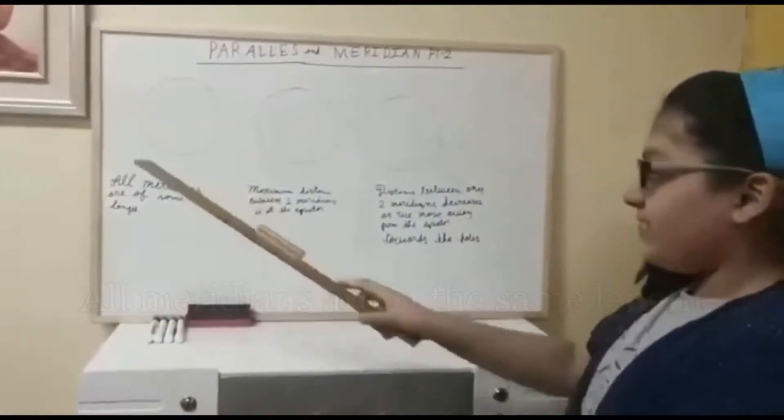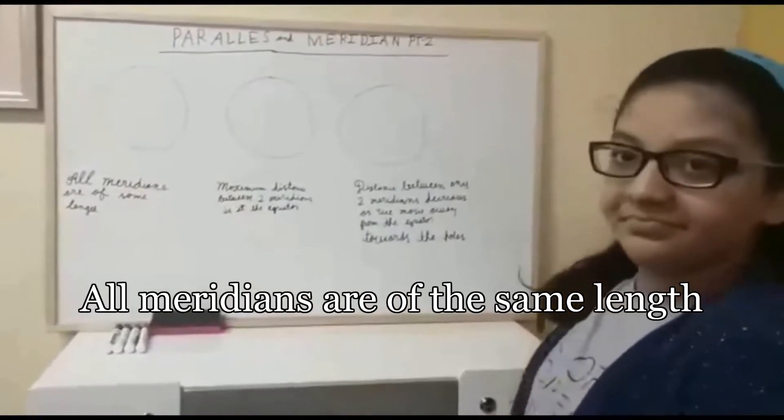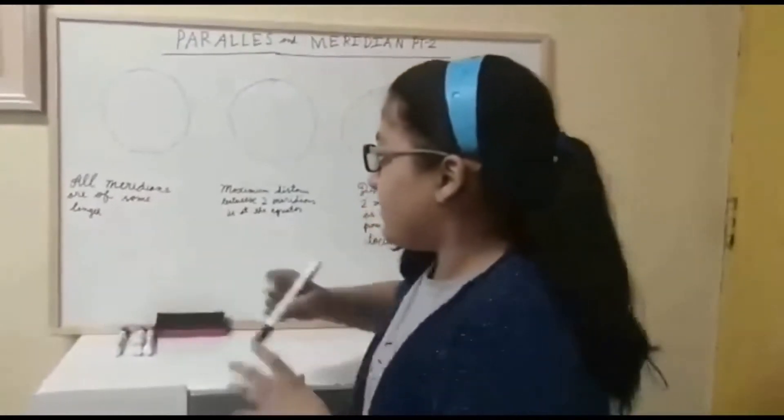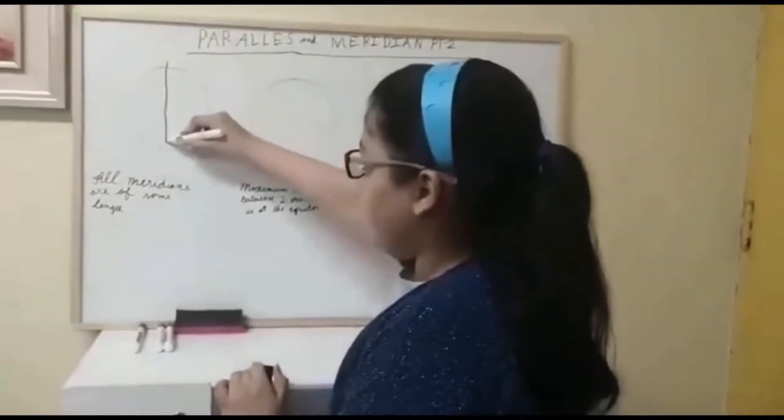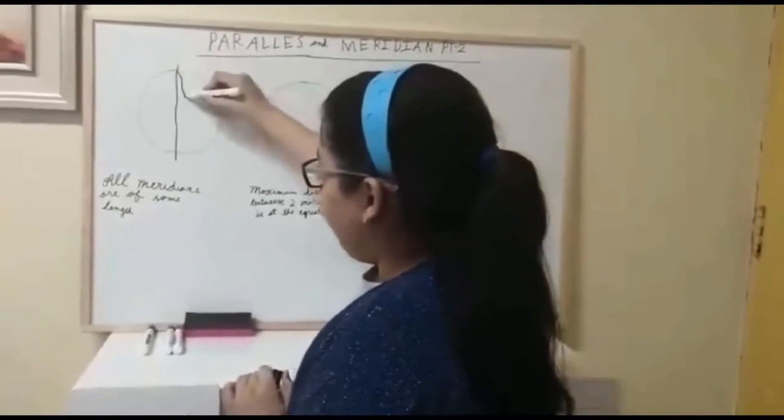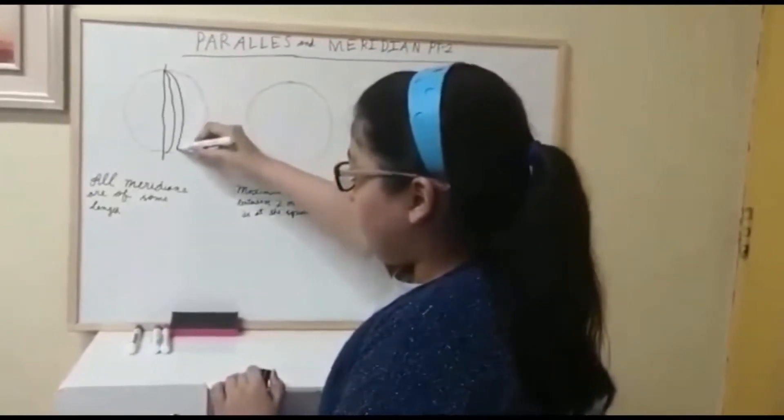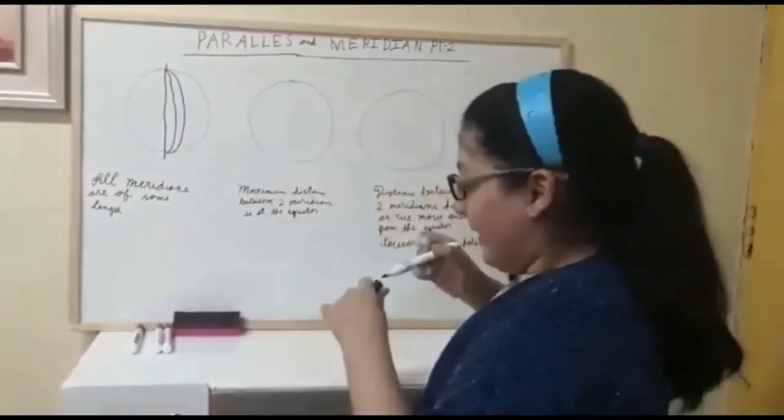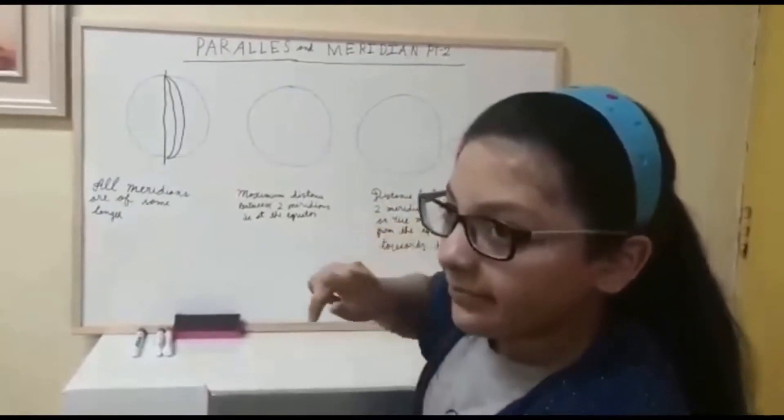The first feature is all Meridians are of the same length. Can you show? Yes. So this is the prime Meridian, the middle Meridian of all the Meridians. And I am going to draw two Meridians here. So all Meridians are of the same length. Next feature.